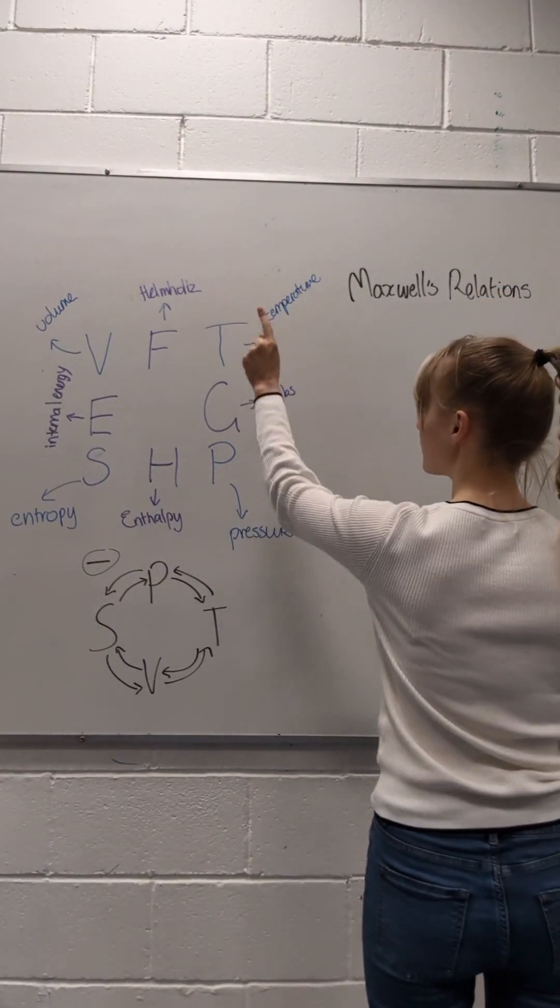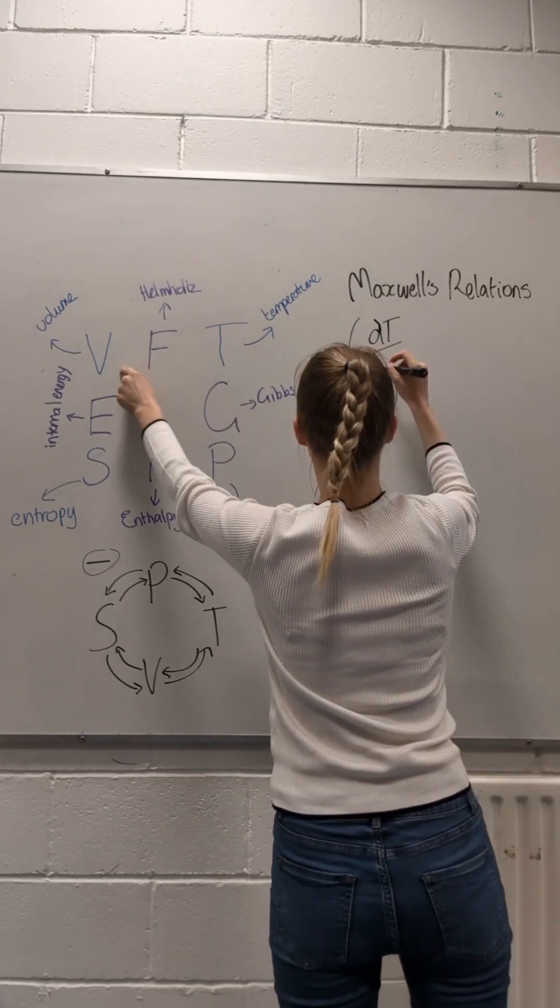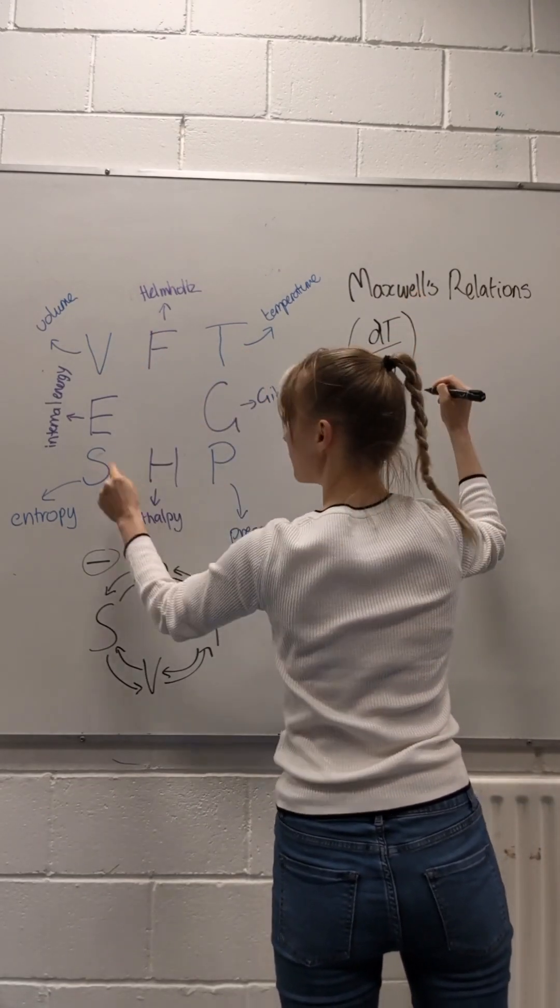Choose a variable, any variable. We're going to start with dT and go anticlockwise to dV. This means that S, the next variable, is the constant.